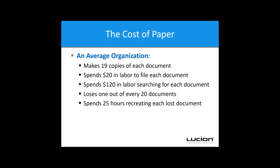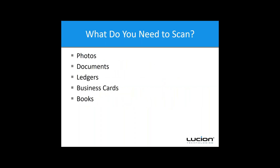We also look at the cost of paper, toner, filing cabinets, et cetera. PricewaterhouseCoopers found that it costs an average of $25,000 just to fill a four-drawer vertical file cabinet and more than $2,100 to maintain it. If we can decrease the number of file cabinets and put a desk there instead so somebody can help more clients, that's an ultimate goal. Also, the average organization makes 19 copies of each document through its life cycle, and one out of every 20 documents is lost.